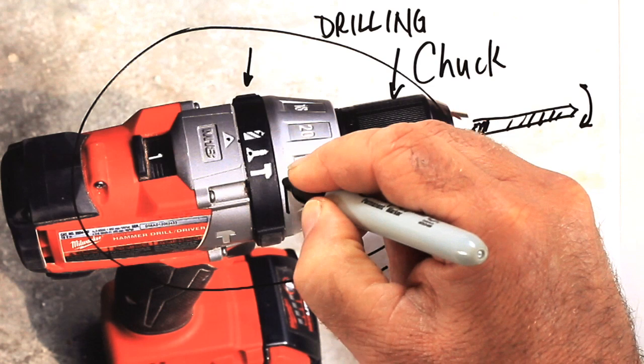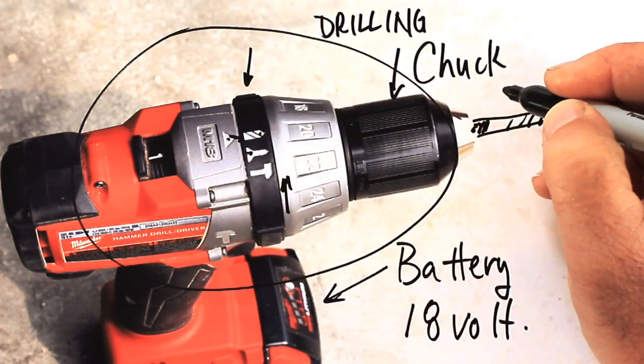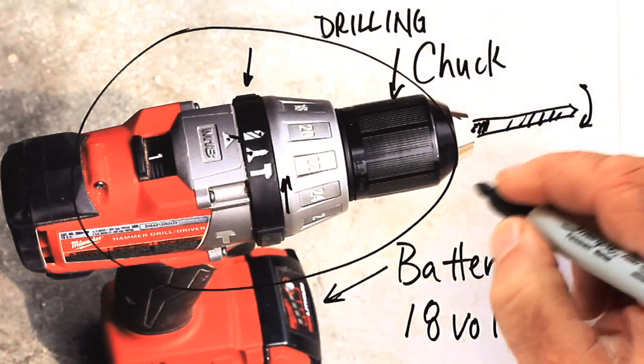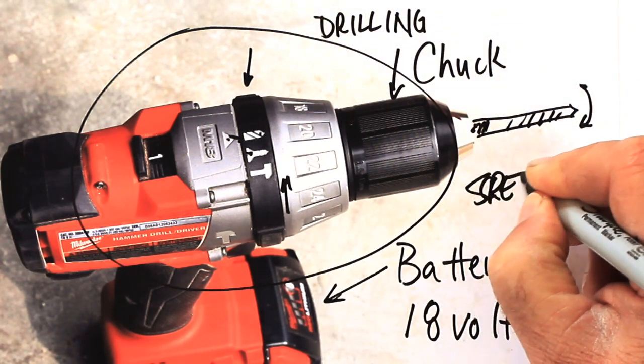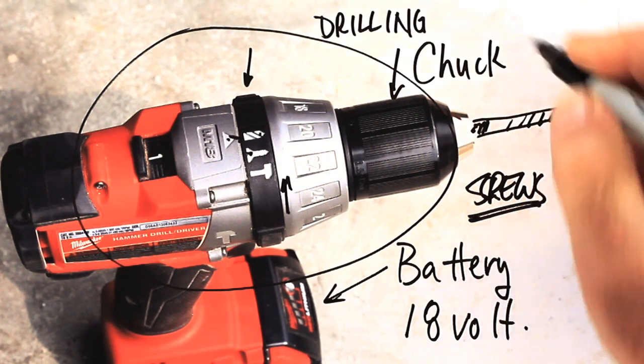If I rotated the collar so that the screw icon was lined up with the triangle, I would have variable clutch control. And that's ideal for driving screws to a consistent length without having to eyeball it all the time.